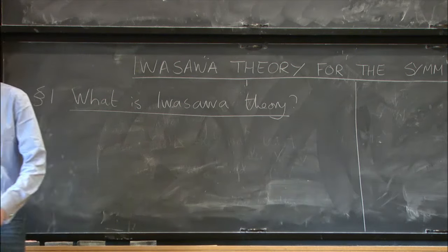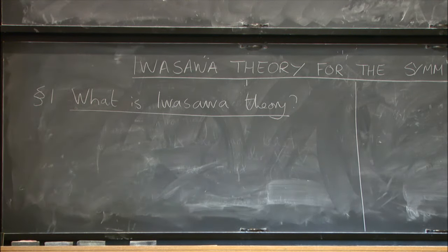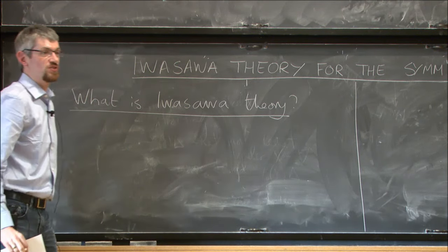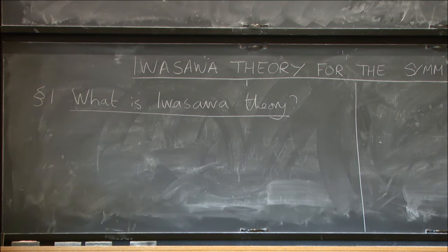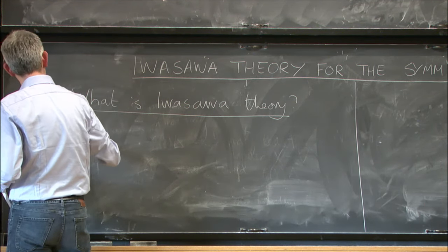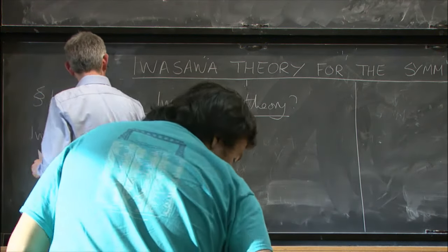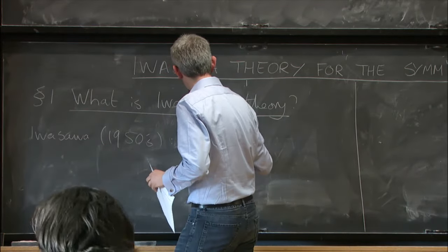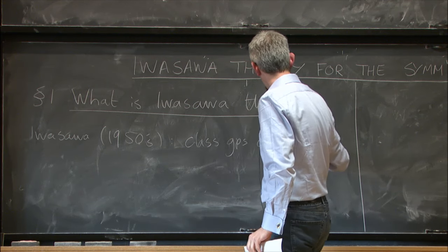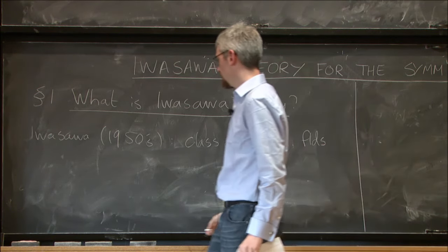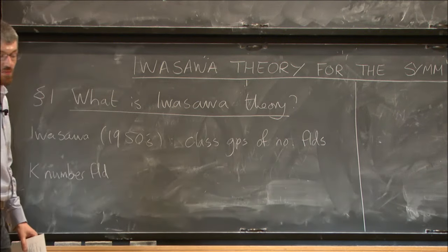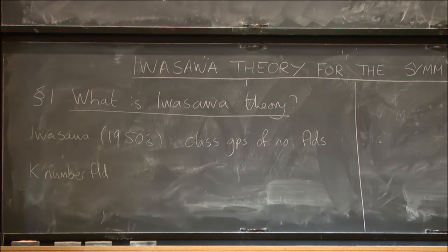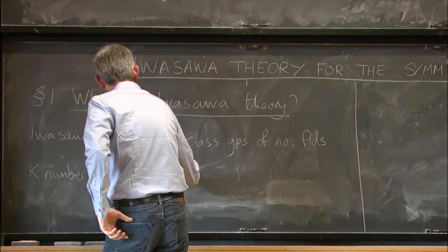So roughly, the idea of Iwasawa theory, going back to the original work of Iwasawa himself, is that if you're interested in the arithmetic of number fields or of objects over number fields, sometimes it becomes smoother and easier to study when you make a tower of number field extensions. So the basic case of this goes right back to the 1950s.